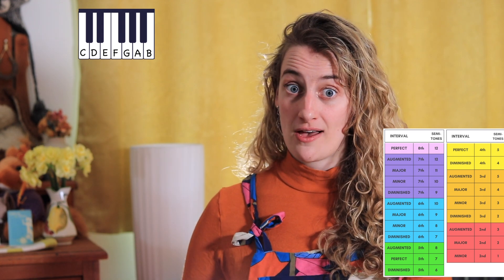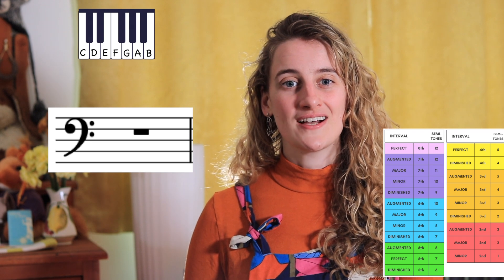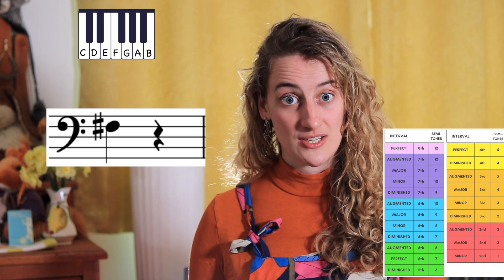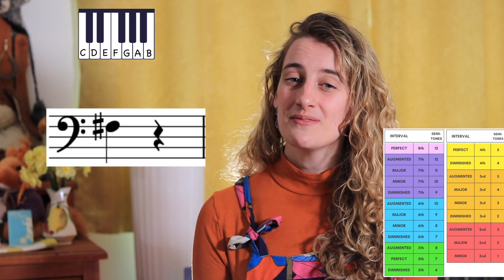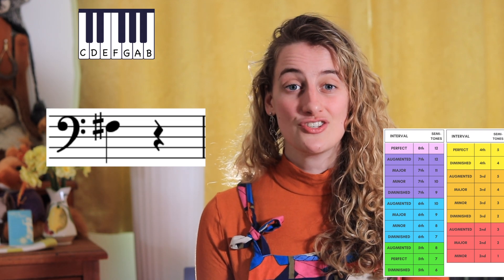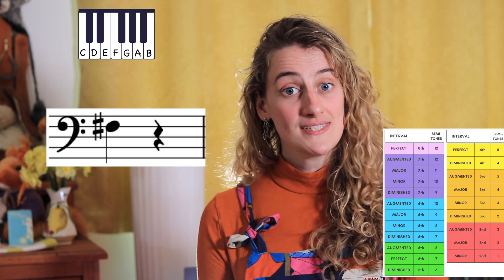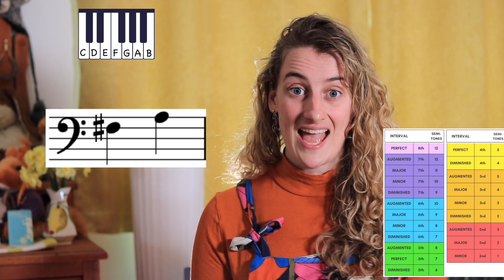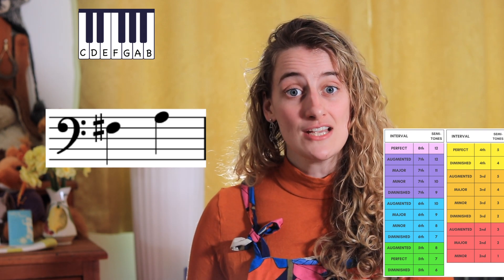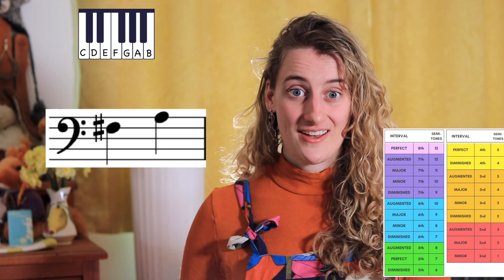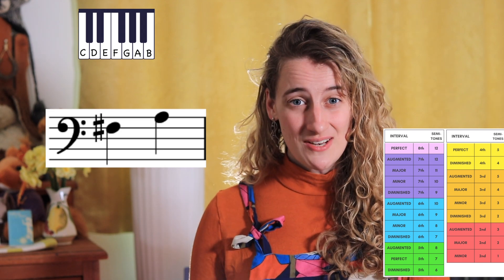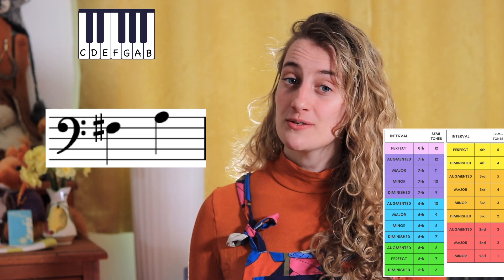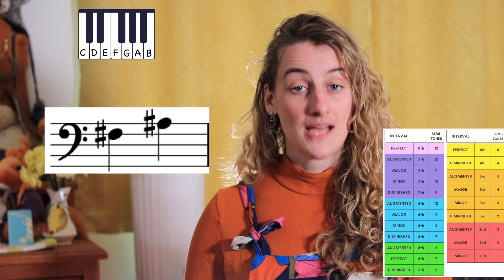Now let's try drawing some intervals. We're going to draw a stave and a bass clef, starting with F sharp. For your first interval, I want you to draw a major third. With a third, we're always going to move up to the adjacent line or space. So if F is on this line, we go up to the next line — that gives us A. A major third is four semitones, so counting four semitones up from F sharp gives us A sharp. We just need to add a sharp onto our A to make it a major third.